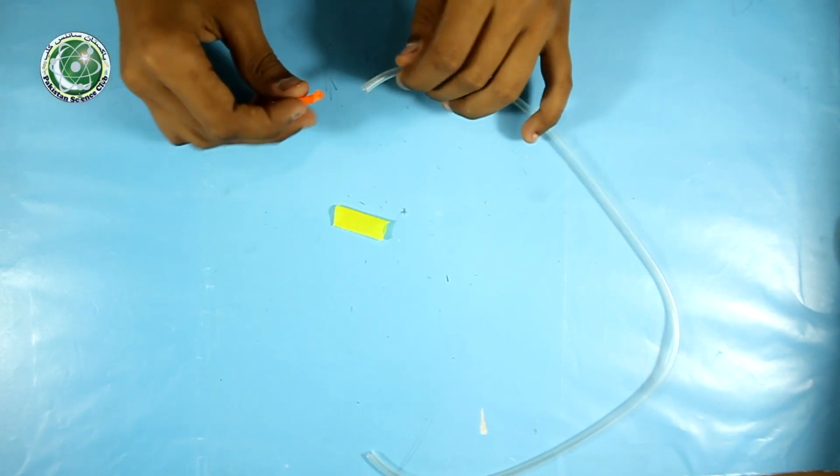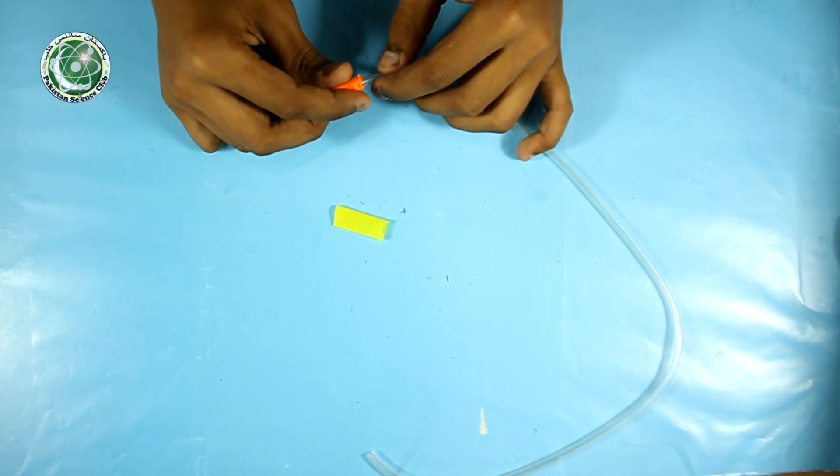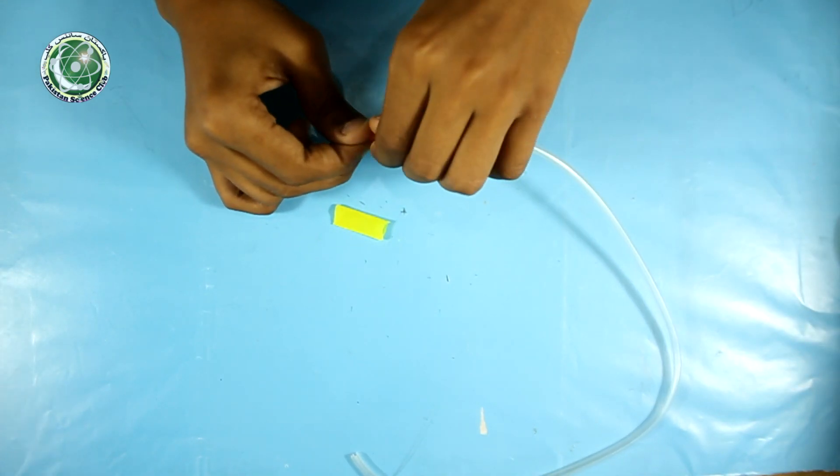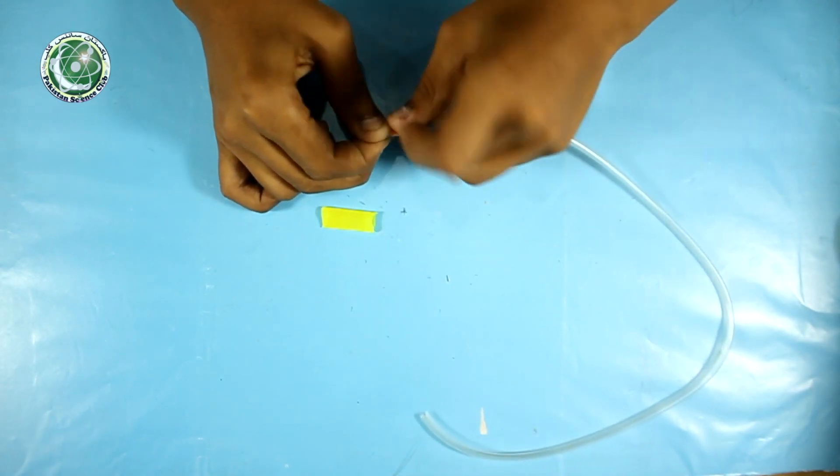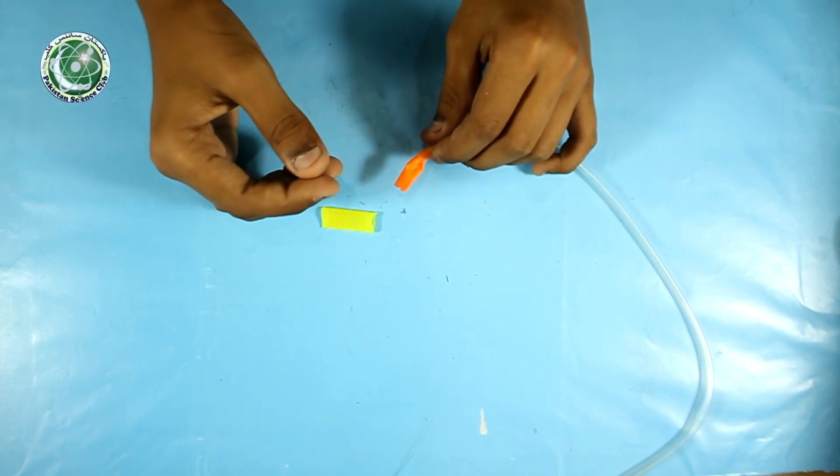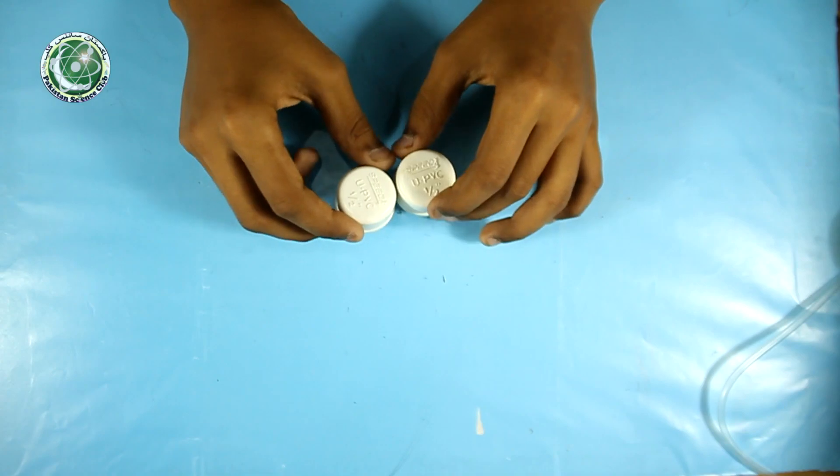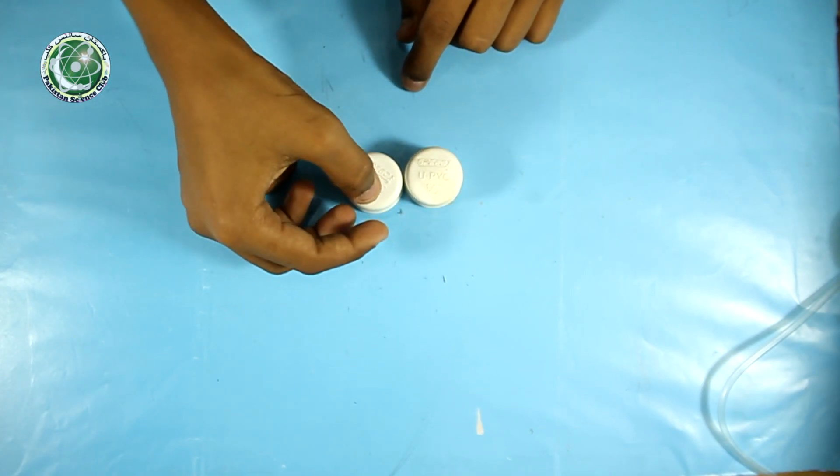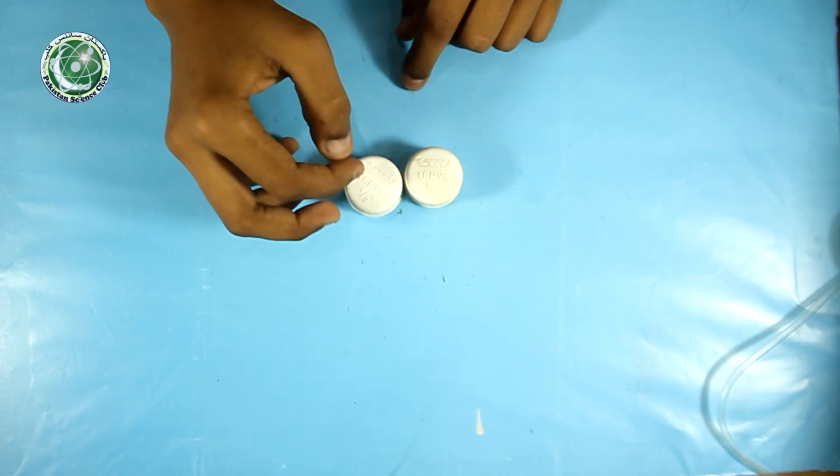In the same way we will formulate the next one. Now I will take another pipe and in the same way I will attach the balloon with the drip pipe. Now I will take both PVC caps and make holes in them. One would be in the middle and the second would be on the side.